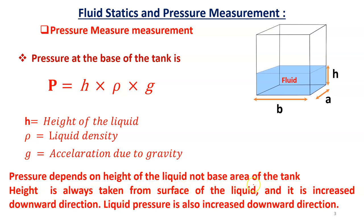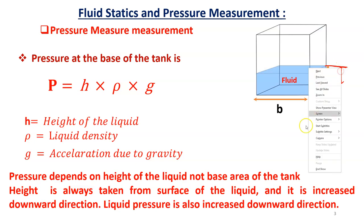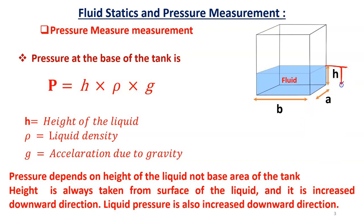Height is always measured from the surface of the liquid — the surface is the zero coordinate, and height increases in the downward direction. As height increases downward, liquid pressure also increases downward. So at any point, the pressure is P = h × rho × g, where h is measured from the liquid surface.